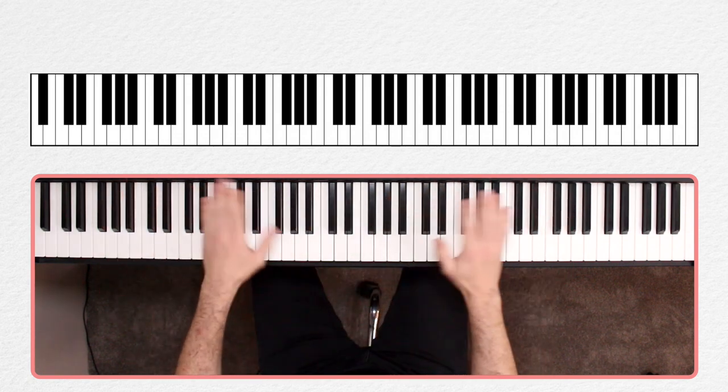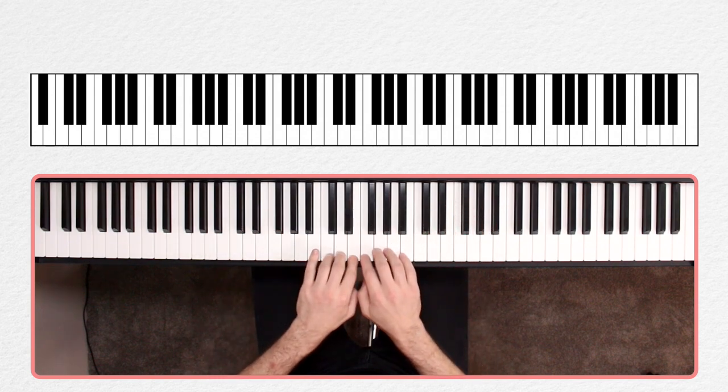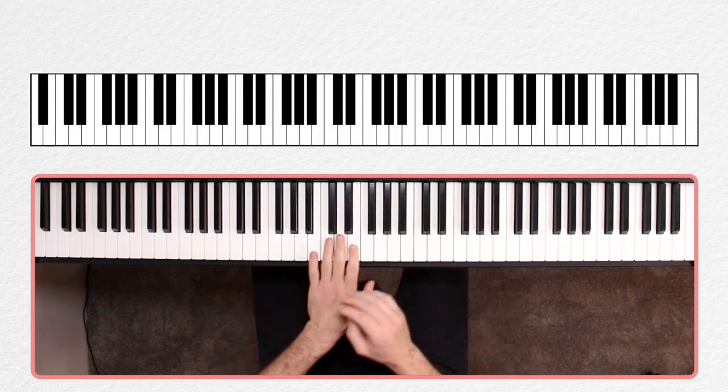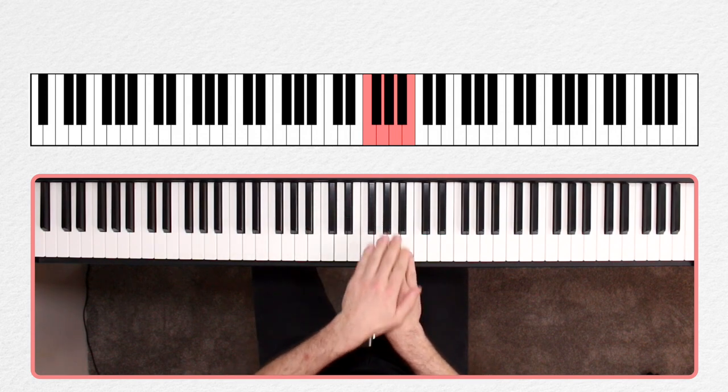Okay, so around these two and three black key groups, we have some distinct white key groups. We can think of the three white keys surrounding the two black keys as a group, and the four white keys surrounding the three black keys as a group.